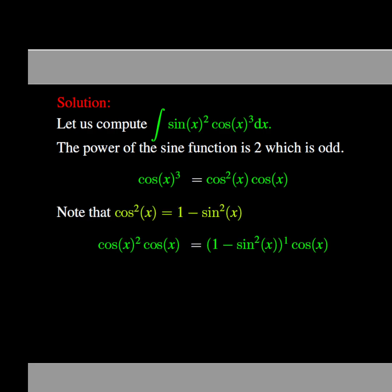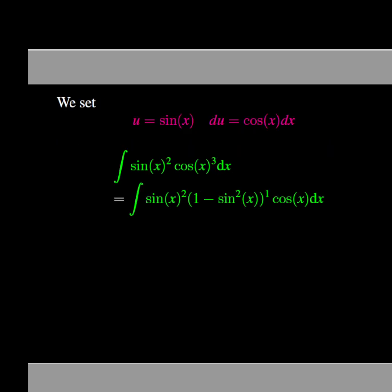Note that the square of the cosine function is equal to 1 minus the square of the sine function, so cosine squared of x can be expressed solely in terms of sine of x. So we have cosine of x to the power 2 times cosine of x equal to the expression 1 minus sine squared of x, times cosine of x. Now let us set u equal to sine of x and du equal to cosine of x dx.